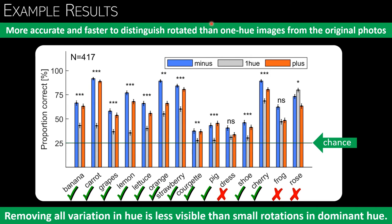Objects where this did not work were either control objects like the frog and the rose that appear to have more than one color, or objects where all conditions were not distinguishable from the original...